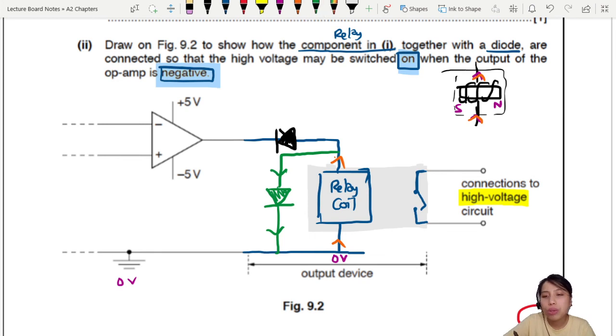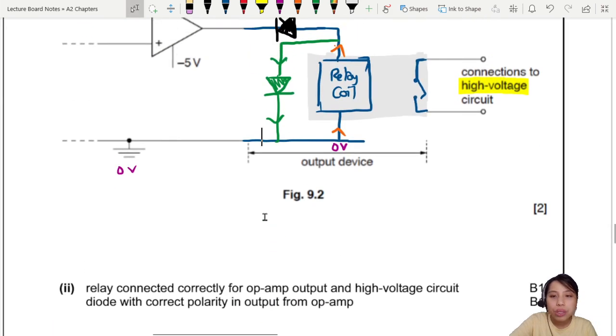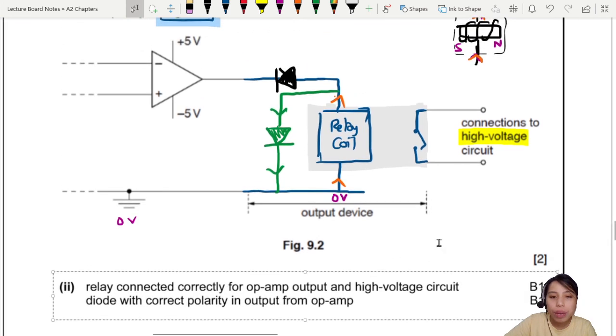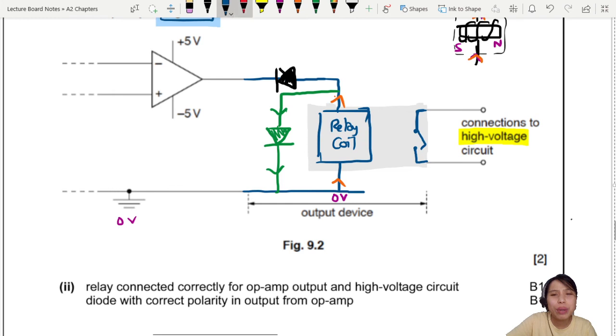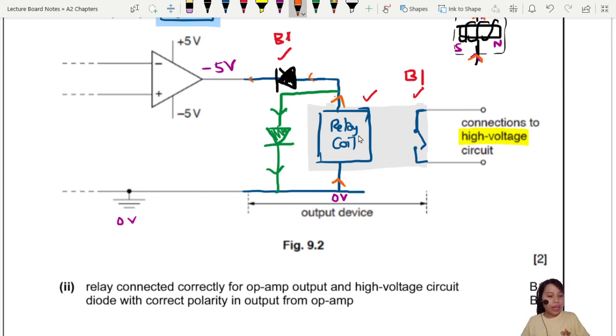Usually if they have three marks only. You need to draw. If two marks, no need also can. Where do the marks come from? Let's take a look at the mark scheme. So first mark comes if your relay connected correctly for op amp output and high voltage circuit. Not very helpful right? Connected correctly. What does it mean correctly? It means this part here. Relay on this side. To the op amp. And the high voltage side got a switch. So this one is B1. The second mark usually come from your diode. Diode in the correct polarity. So pointing to the left side. Then that will be correct. To control only. Enable only one output of the op amp. To activate the relay. And that is when it is negative 5. Then only got current flow. So that is the relay question.